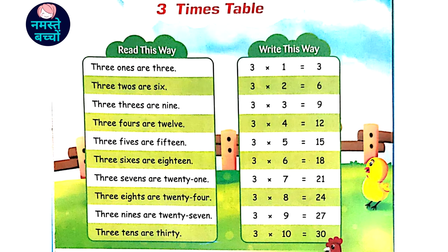3 4's are 12, 3 5's are 15, 3 6's are 18, 3 7's are 21.